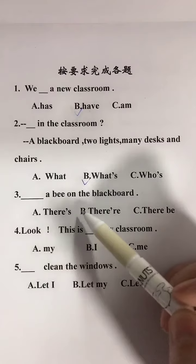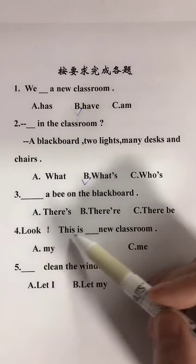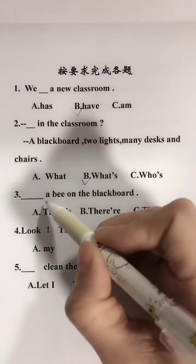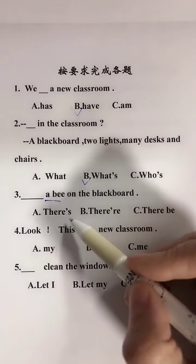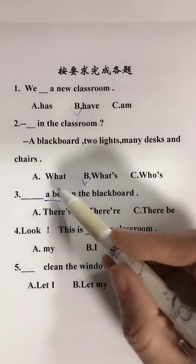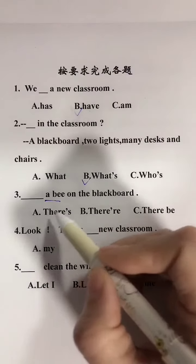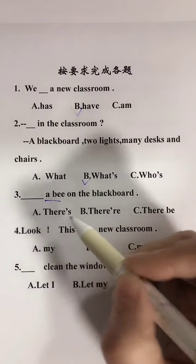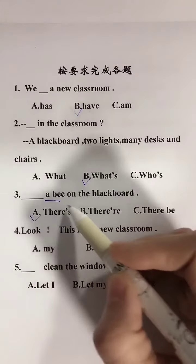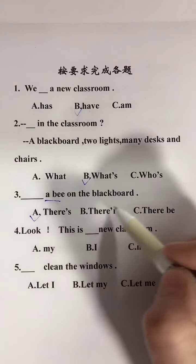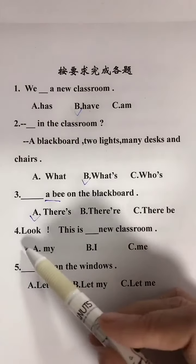第三题：A bee __ on the blackboard。词句是there be句型，主语a bee是单数，动词要跟着名词走，单数要用is，选择a，答案：There's a bee on the blackboard，意思是黑板上有一只蜜蜂。